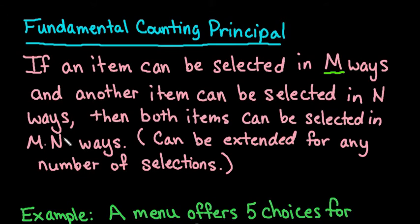And another item can be selected in N ways, and both items can be selected in M times N ways. So basically all this is saying is that if you are looking for the total number of outcomes when you are selecting two items,